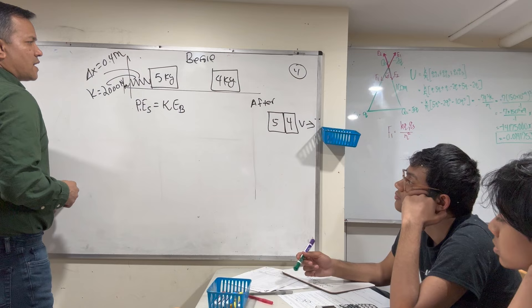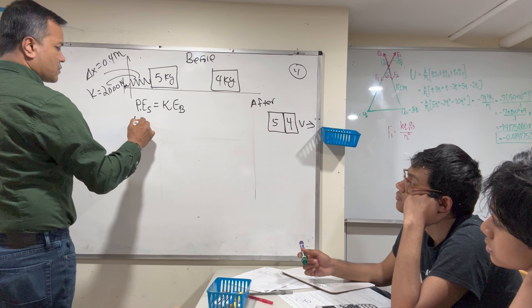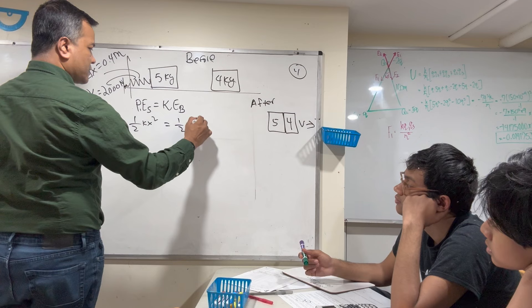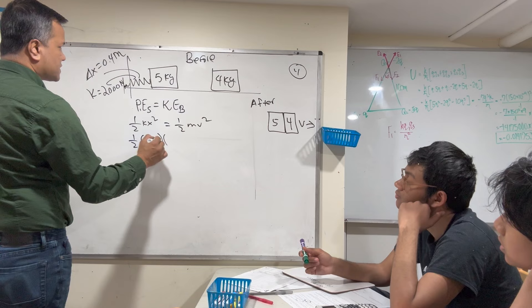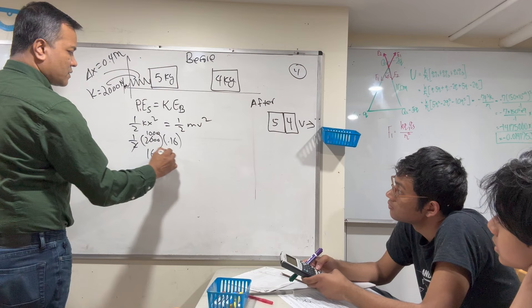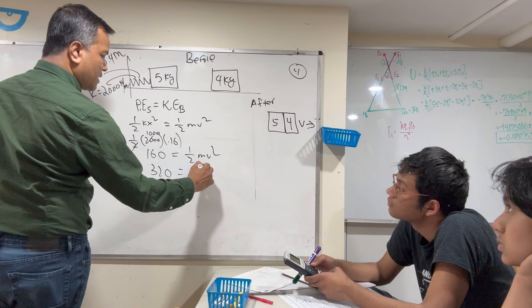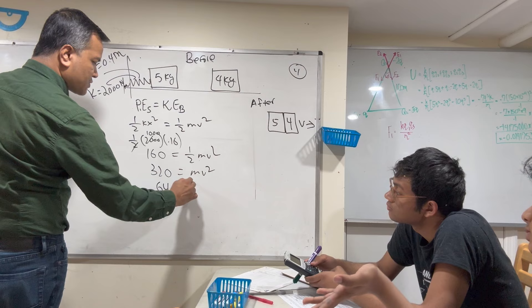So: half k x² = half m v². With k = 2000 and x = 0.4: half × 2000 × 0.16 = 160. So 160 = m v². With m = 5: v² = 32 — wait, that gives v² = 64, so v = 8 meters per second.